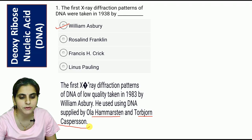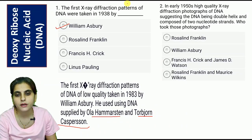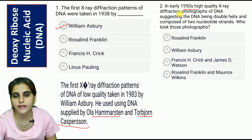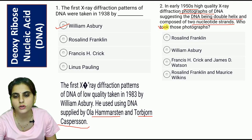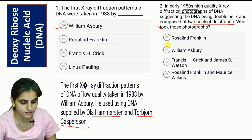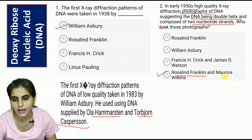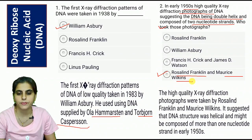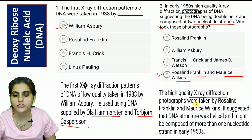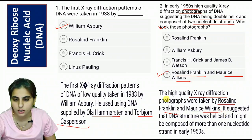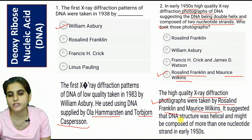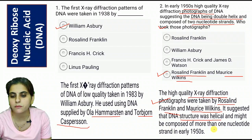Next question: In the early 1950s, high-quality X-ray diffraction photographs of DNA suggesting the DNA being a double helix and composed of two nucleotide strands — who took these photographs? The correct answer is D, that is Rosalind Franklin and Maurice Wilkins. These photographs suggested that the DNA structure was helical and might be composed of more than one nucleotide strand.